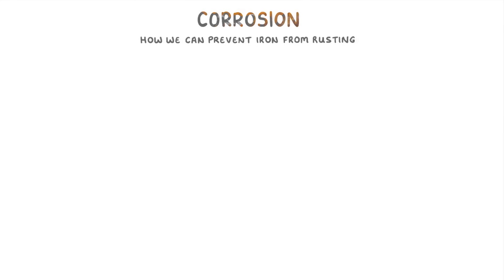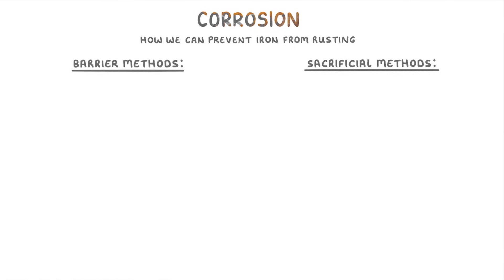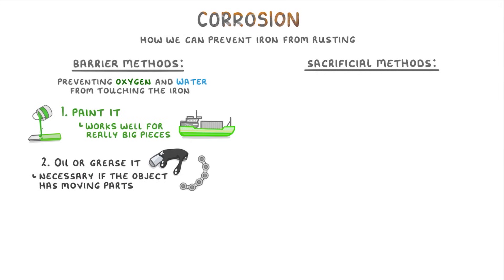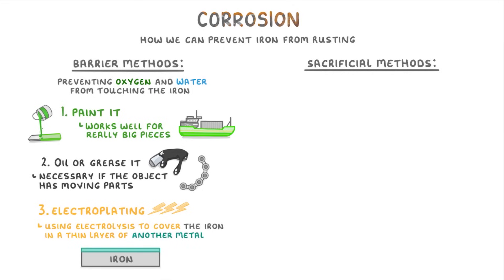The last thing we need to look at is how we can prevent iron from rusting. Generally speaking, we can split the methods into two main categories: barrier methods and sacrificial methods. Barrier methods work by preventing oxygen and water from ever touching the iron. There are three main types: painting, which works well for large pieces of iron like the side of a ship; oiling or greasing, which is necessary for objects with moving parts like a bike chain; and electroplating, which uses electrolysis to cover the iron in a thin layer of another metal, protecting the iron underneath.